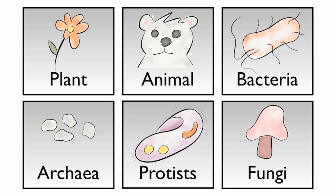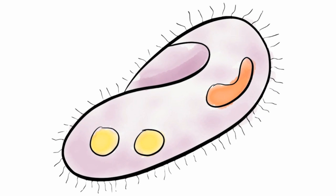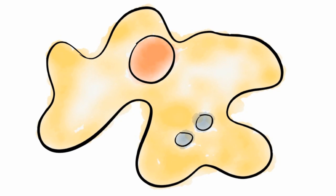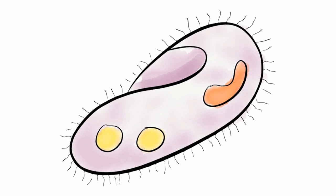The next group are called protists. These organisms are microscopic and can be found in pond water. Some examples are paramecium, amoebas, and euglenas.